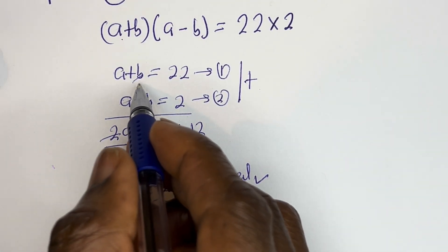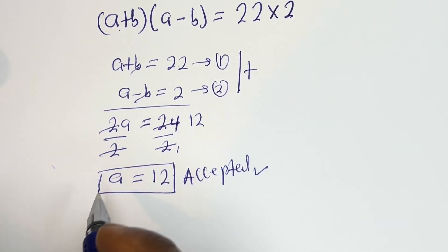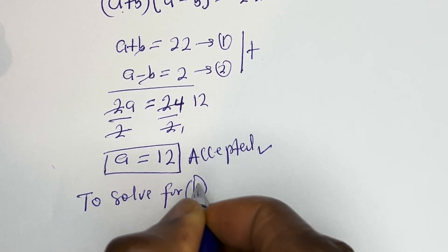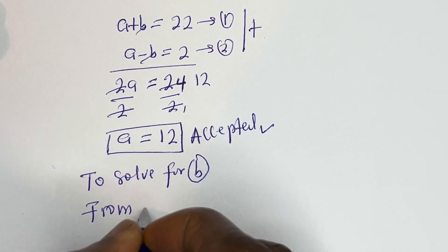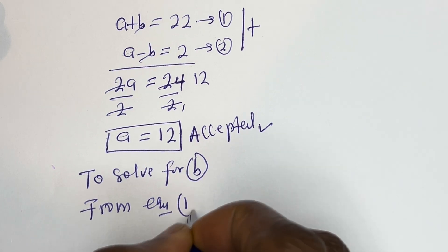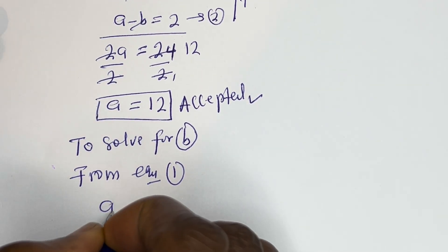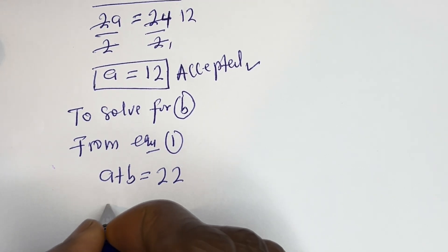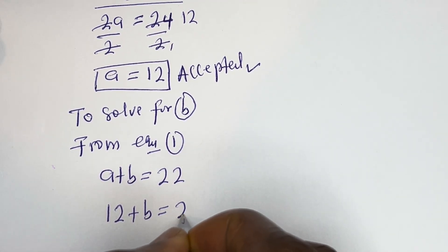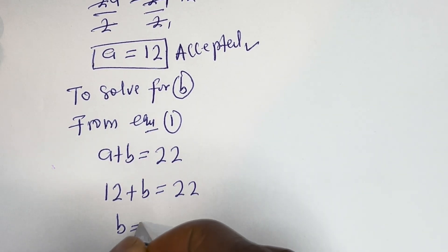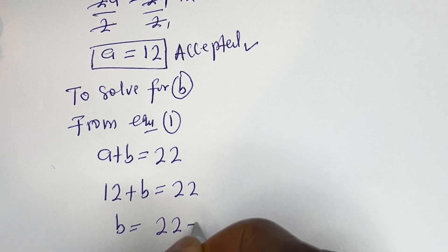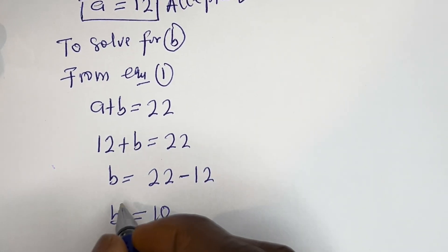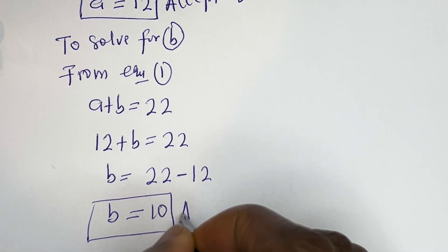We've gotten the value of a. Now let's solve for b using equation 1: a + b = 22. When a = 12, we have 12 + b = 22, so b = 22 − 12, which gives b = 10. This is also a natural number and is accepted.